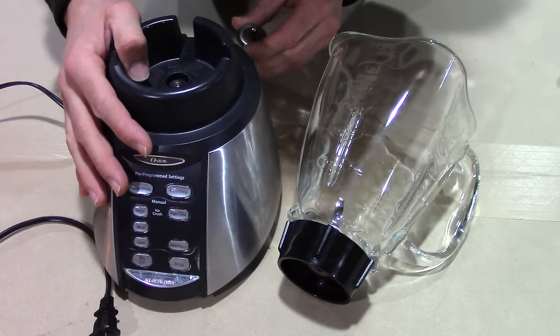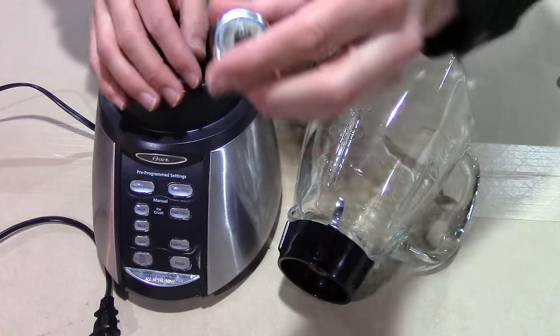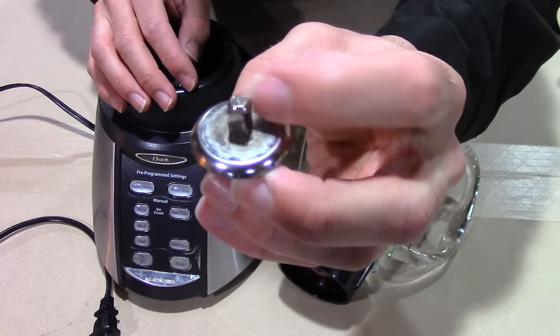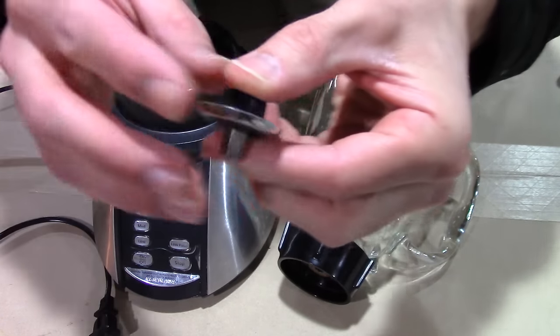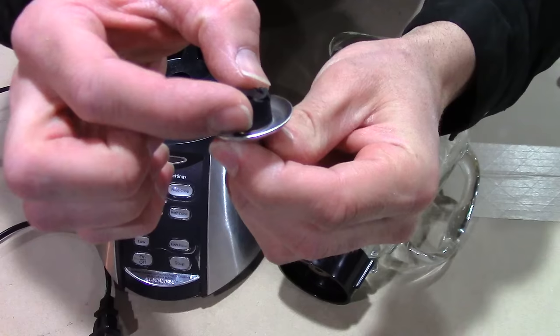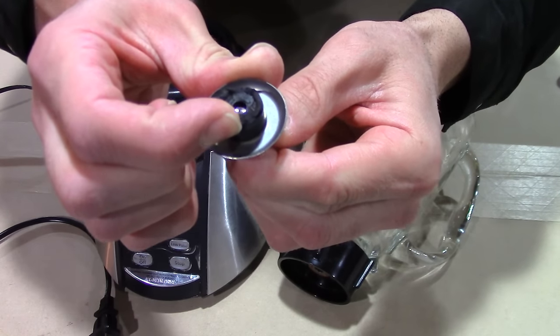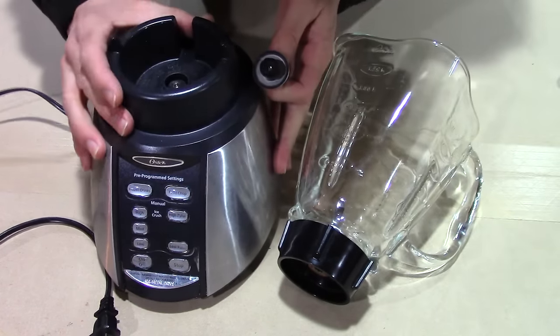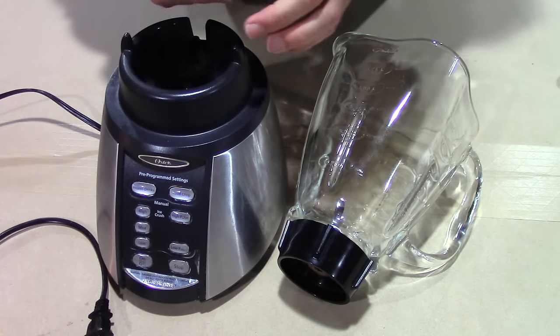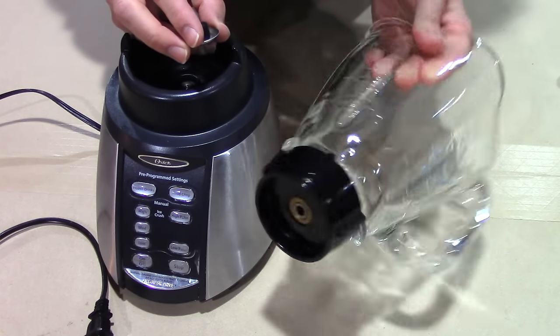This Oster blender has a driver that's been broken off. You can see that's the driver there, the metal, but the coupling is actually rubber. So this breaks off if you're putting too much frozen fruit or ice or stuff like that that makes it harder for this to spin.